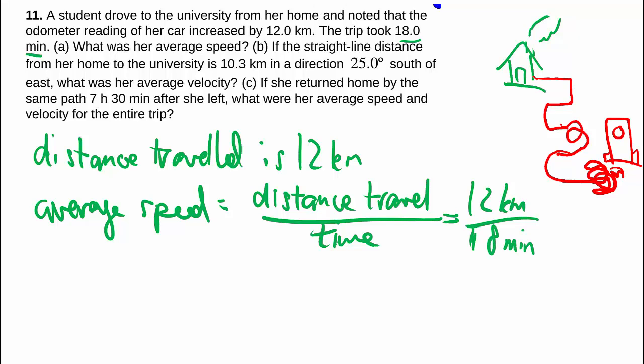We could figure the answer in kilometers per minute but usually we use kilometers per hour so we might as well convert the minutes into hours. How many minutes are there in an hour? 60. Working out the answer in your calculator,